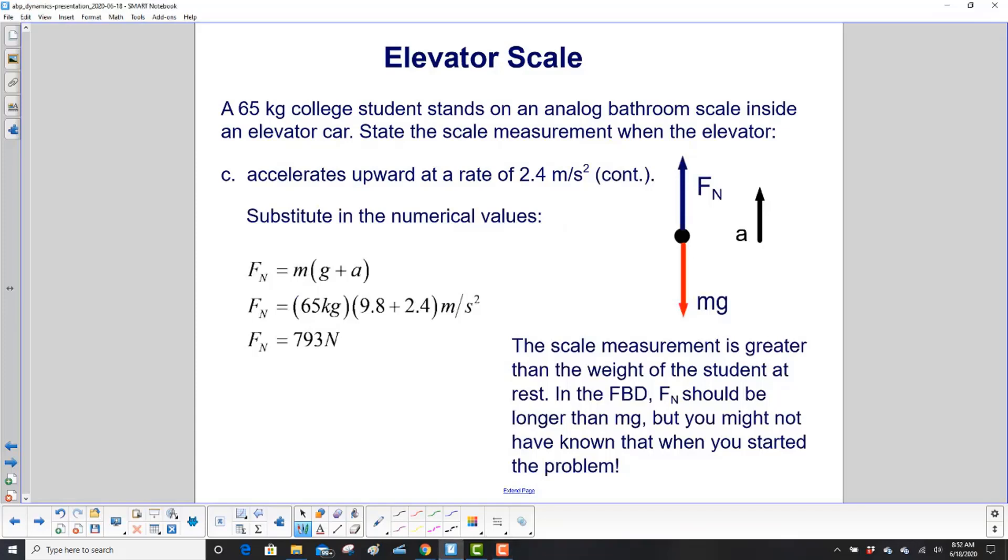And finally, we substitute in our numerical values over here. And see how you only have to multiply by the mass once because we factored it out? That's pretty good. And we get the normal force, which is the scale measurement, of 793 newtons. So the scale measurement is greater than the weight of the student at rest. So in the free body diagram, this vector should be longer than this one. But you didn't know that when you started the problem. So it's okay. We got the right answer. Because the important thing is the direction of the vectors.